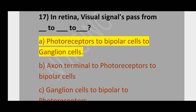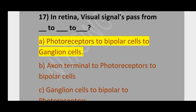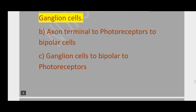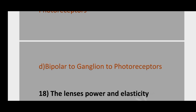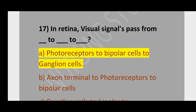Question number 17. In the retina, visual signals pass from dash to dash to dash: option A, photoreceptor to bipolar cells to ganglion cells; option B, synaptic terminal to photoreceptor to bipolar cells; option C, ganglion cells to bipolar to photoreceptor cells; option D, bipolar to ganglion to photoreceptor cells. The answer is photoreceptor to bipolar cells to ganglion cells.